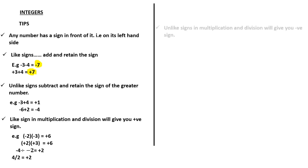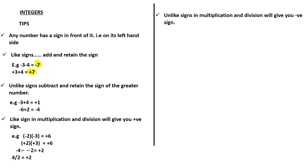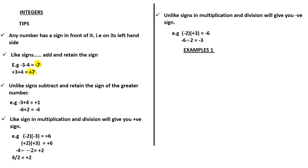The final tip: unlike signs in multiplication and division will give you a negative sign. If two numbers you are multiplying or dividing have different signs — one positive, one negative — the result will always be negative. For instance, negative two times positive three gives negative six. Negative six divided by positive two also gives negative three. So if you are multiplying or dividing two numbers with different signs, your answer must be negative.